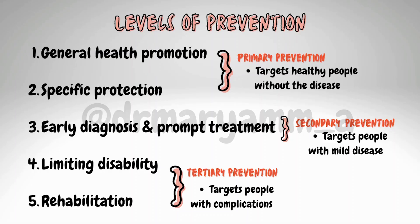The first two — general health promotion and specific protection — fall under primary prevention and are usually targeted towards healthy people without the disease. Early diagnosis and prompt treatment falls under secondary prevention, targeted towards people with mild forms of the disease. Limiting disability and rehabilitation fall under tertiary prevention, targeted towards people with the disease who already have complications.